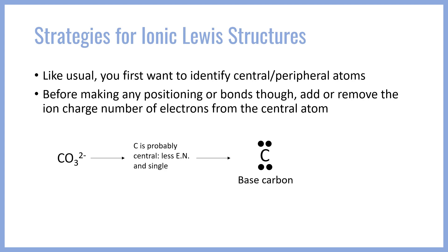Our base carbon has four electrons. However, this ion has a 2- charge, which means we need to add two electrons. So we're going to add two electrons to our central atom to get C 2-, which has six electrons.